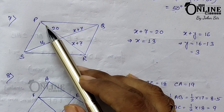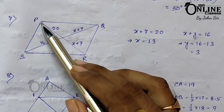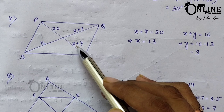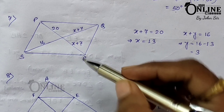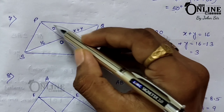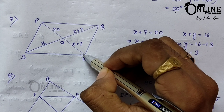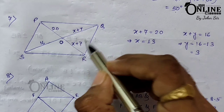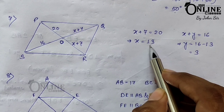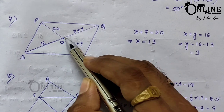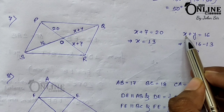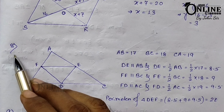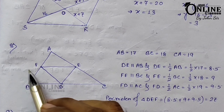Number seven: PQRS is a parallelogram. Find X and Y, given lengths in centimeters. SQ and PR are two diagonals. Since the diagonals of a parallelogram always bisect each other, PO = OR and SO = OQ. Therefore 20 = X + 7, giving X = 13. Then 16 = X + Y, so Y = 16 − 13 = 3.